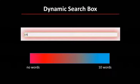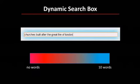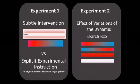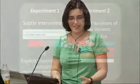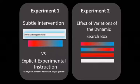What we designed was a dynamic search box with a colored halo around it. As you type more words, it changes color from red to blue. This was inspired by password strength indicators — it's meant to nudge people to type longer queries. We wanted to test how this compares to an explicit intervention, like simply telling people 'if you type longer queries, the search engine will give you better results.' We ran several experiments to understand how people interacted with this dynamic search box.